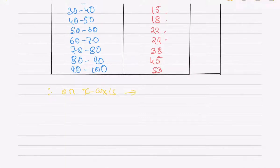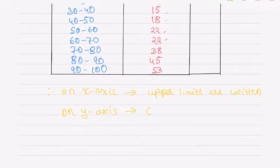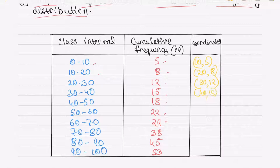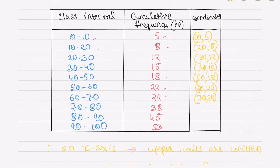On the x-axis, upper limits are written, and on the y-axis you have to write cumulative frequencies. So the coordinates for this will be: (10, 5), (20, 8), (30, 12), (40, 15), (50, 18), (60, 22), (70, 29), (80, 38), (90, 45), and finally (100, 53).